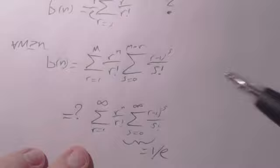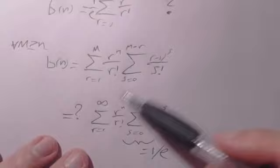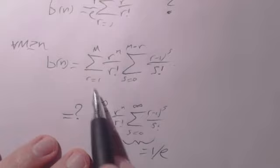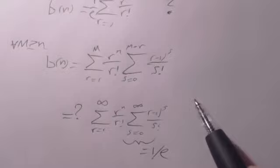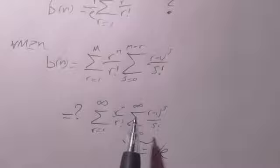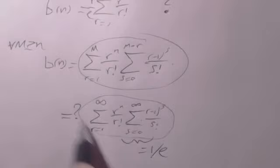However, my claim is that you can't just do this in general. You have two sums, and the upper index on this inner sum depends on r - it's more complicated than that. You need to work much harder to show this is true. Taking the limit as M goes to infinity of this expression is not the same as what the book claims.